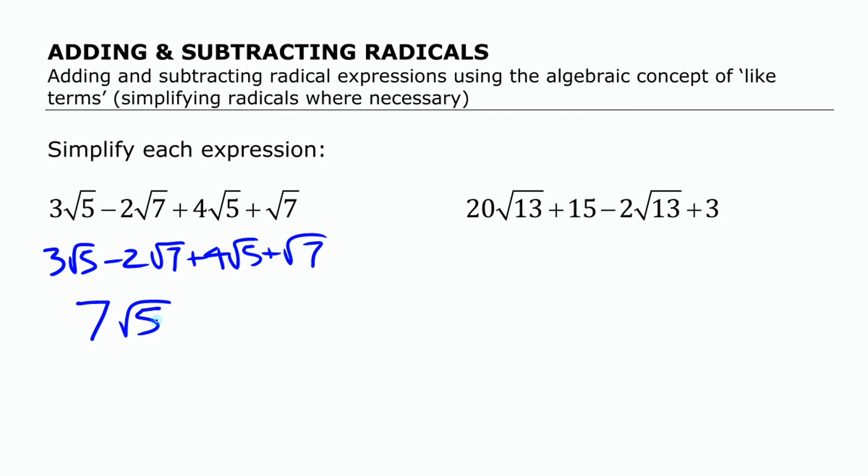It's just seven times as much as root 5, just like before we had seven times as much as x. And if we have minus 2 root 7 plus 1 root 7, we have minus 1 root 7, or just minus root 7.